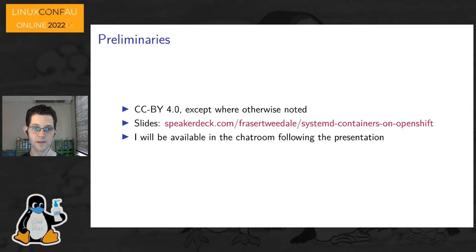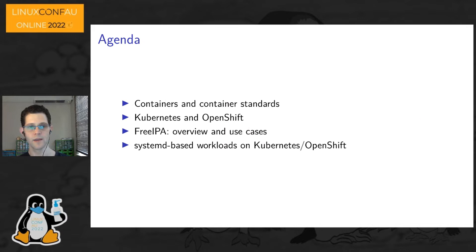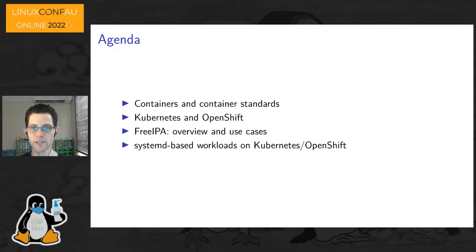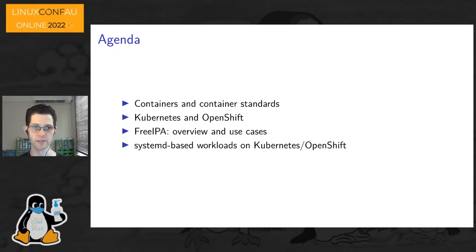Today I will talk briefly about containers — what they are and container standards — and give an overview of Kubernetes and OpenShift particularly with respect to their container runtimes. These are huge products; there's no way to cover even a sizable chunk in depth, so we focus on this one specific area of the runtime. Then I'll talk about FreeIPA, which is the application that is the subject of my team's efforts, and we'll conclude by talking about systemd-based workloads on Kubernetes and OpenShift.